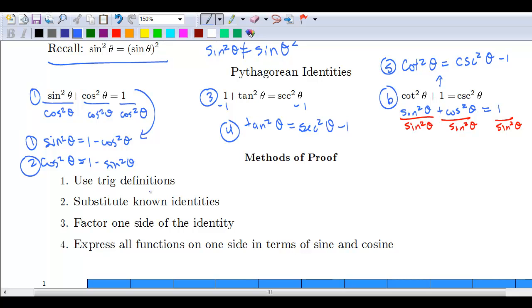Our first method is using those trig definitions that we started off with of what sine and cosine mean. We can also substitute in known identities—now that we have all of these identities, we don't have to reprove them, we can use them. We can factor—factoring is going to come into play, so make sure you're comfortable with that. And expressing all functions on one side in terms of sine and cosine—a lot of times this is helpful because then you can work backwards into either factoring or using trig definitions again.